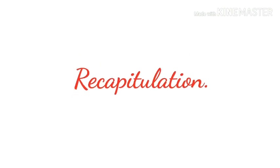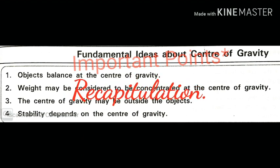Now it's recapitulation time. Objects balance at the center of gravity. Weight may be considered to be concentrated at the center of gravity, the entire weight of the body. The center of gravity may be outside the object. Stability of the body depends on center of gravity. These are the important key concepts of today's topic. Learn these key concepts for learning physics.